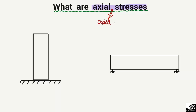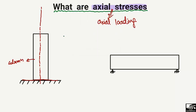For example, consider a reinforced concrete column or steel column that is fixed at the bottom. The longitudinal axis of this column is the X-axis. When a load on this column acts along the X-axis — that is, along the axial axis of the column — the stress created due to this axial load is known as axial stress.